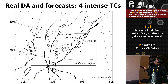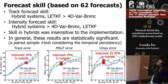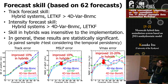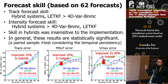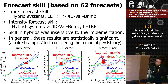We applied these systems to real data assimilation and forecast experiments for intense tropical cyclones in 2011 and 2012. Based on 60-hour forecasts, the track forecast skill is almost the same between hybrid systems and the LETKF system, improving track forecast about 10% relative to 4DVar BNMC. For intensity forecast, hybrid systems give the best result over 4DVar BNMC and LETKF. The skill in hybrid systems is insensitive to the choice of implementation, and improvements over the 4DVar system are statistically significant based on 62 forecasts.